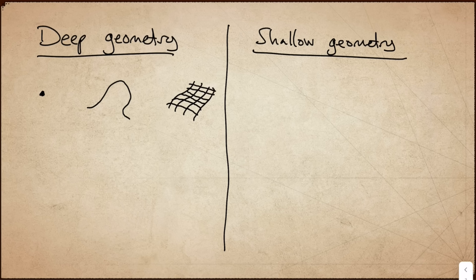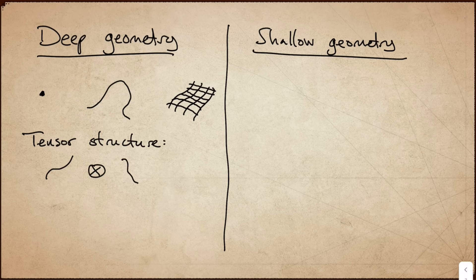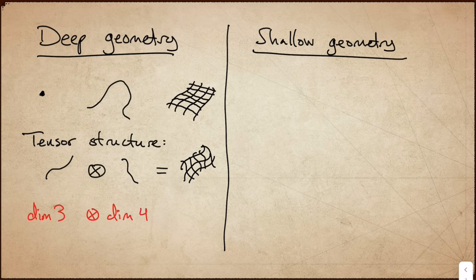In deep geometry, there is a tensor structure where you can take the Cartesian product of, for example, one curve with another curve, and that gives a surface. If you have dimension three times dimension four, that would be dimension seven.